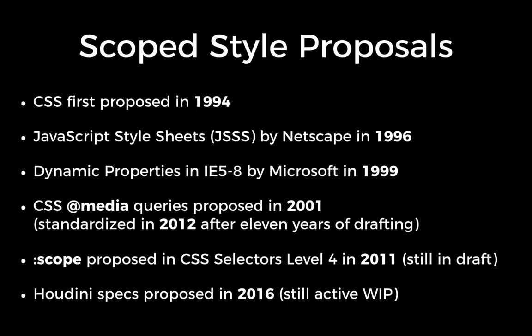Here is a short history of how style scoping has evolved. CSS was first proposed in 1994. Not long after, JavaScript style sheets were introduced by Netscape as a way to interact from JavaScript to styling. Dynamic properties — the expression statement — were introduced in Internet Explorer 5 in 1999 and stuck around until IE 8. CSS media queries were proposed in 2001, but took 11 years of specification before they were finally approved. The scope pseudoclass was proposed in CSS Selectors Level 4 in 2011 and is still in draft.